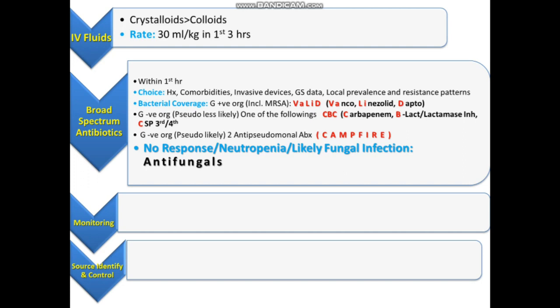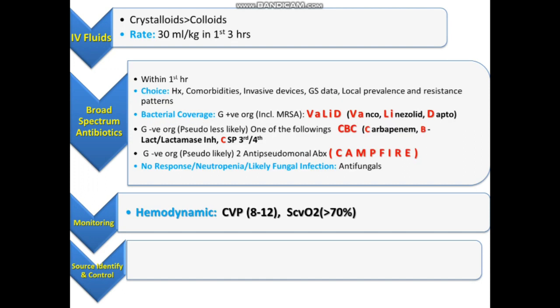We are giving IV fluids and broad-spectrum antibiotics, so we need to monitor the response. Hemodynamic monitoring includes two things: central venous pressure — the target should be between 8 and 12 — and central venous oxyhemoglobin saturation, ScvO2, which should be more than 70%. If these targets are achieved, there is no need for vasopressors.